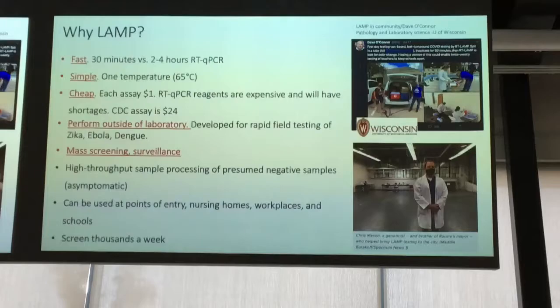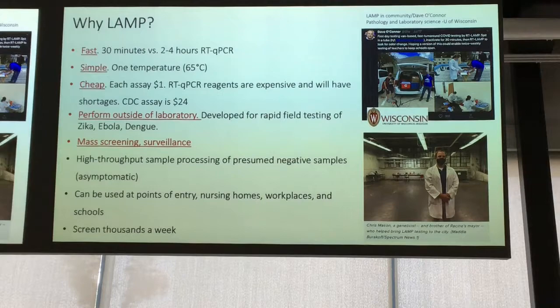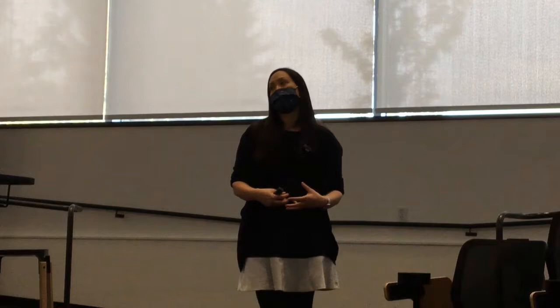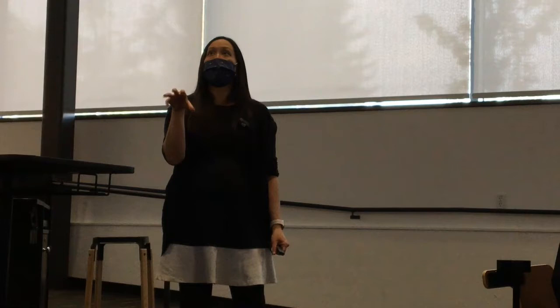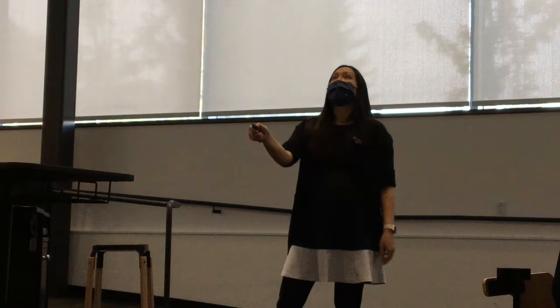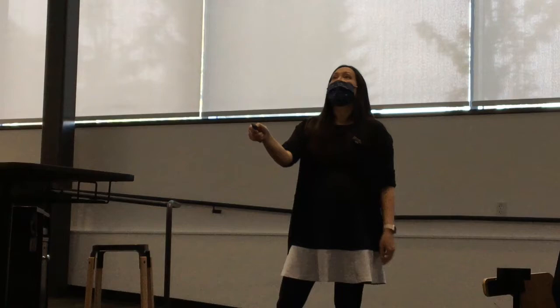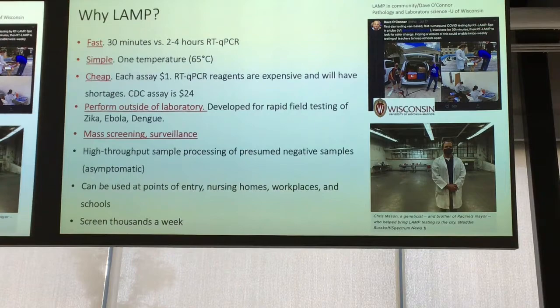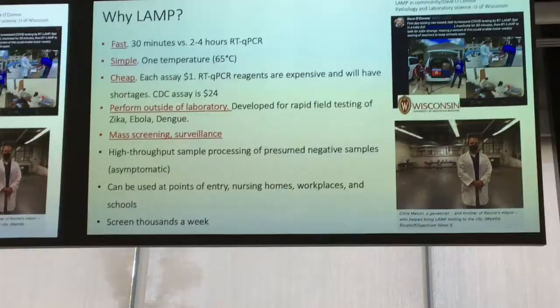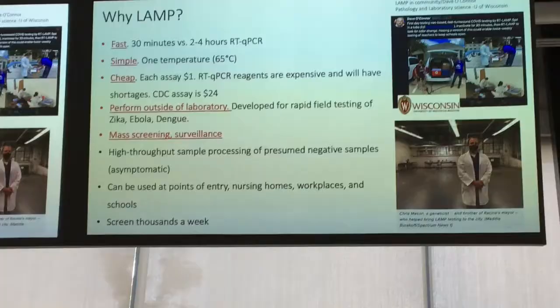LAMP offers a way to test asymptomatic people — so much research now shows a lot of transmission is happening from people who don't know they're sick, who are just spreading the virus around. The nice thing is it can be field deployable — not tied to a lab. At the University of Wisconsin, they're testing right outside an elementary school in a van — they call it the COVID van — signing consent forms and doing tests right there in half an hour. Chris Mason, a geneticist, brought it to firefighters at a fire station. That's the neat thing about this test.